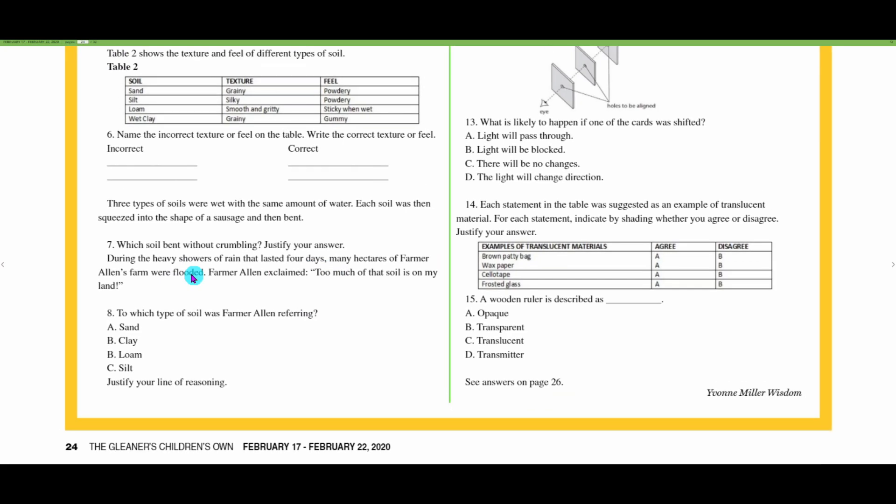During heavy showers of rain that lasted four days, many hectares of farmer Allen's farm were flooded. Farmer Allen exclaimed too much of that soil is on my land. Question eight: to which type of soil was farmer Allen referring? Sand, clay, loam, and silt. Justify your line of reasoning. I would go with clay because clay particles are fine and closely packed together and do not allow water to pass too easily.